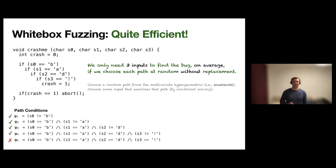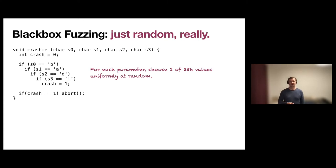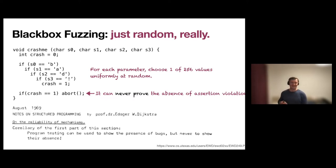Black box fuzzing, on the other hand, is very simple. The only thing you need to know is that the program takes inputs and for some of those inputs it will crash. The black box fuzzer just assigns a random value to each parameter — the range of these values can be one out of 256 values, because a character in C has 256 values. Everyone knows it can never prove the absence of errors. That's the famous quote from Dijkstra: 'Program testing can be used to show the presence of bugs, but never to show the absence.'